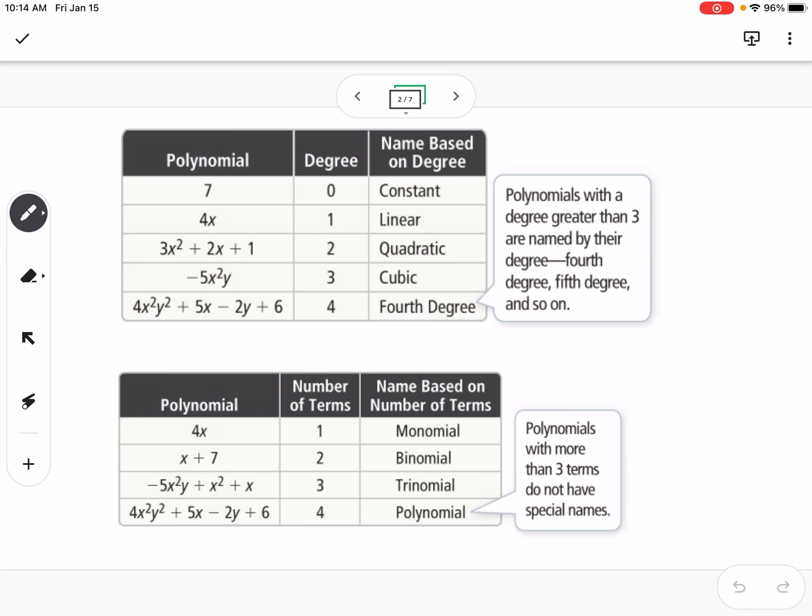The first thing that we can talk about is there's two different ways we name polynomials. We name based on the degree, so the highest power of our variable, and we can name based on the number of terms.